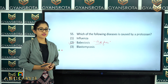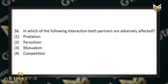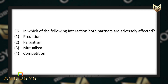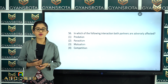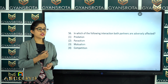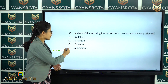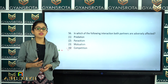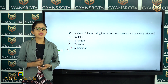The next question is question number 56. In which of the following interactions are both partners adversely affected? Predation, parasitism, mutualism, or competition? From the chapter Organisms and Population, the correct answer is option number 4 — competition. During competition, both partners are adversely affected.